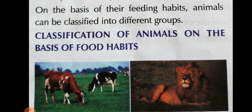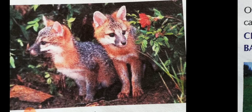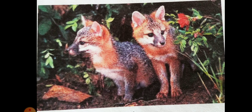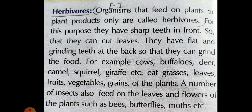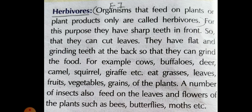Here you can see the images of cow and lion. Cow is herbivore while lion is carnivore. You can also see a picture of omnivores. The heading is given: herbivores means sakahari. Organisms that feed on plants and plant products only are called herbivores.